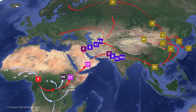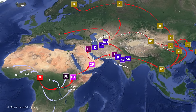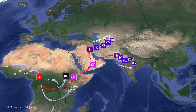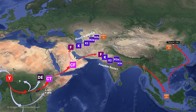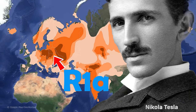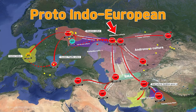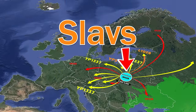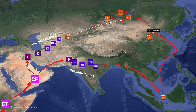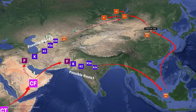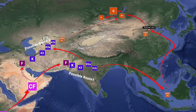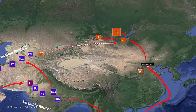Ancestors in haplogroup N first migrated to Asia, then through Asia and northern Siberia, they went to northern Europe. K2B-P331 diverges into K2B1 and K2B2-P295, also known as P. QM-242 and RM-207 separate from P1M-45, a direct descendant of P. The common ancestor of Q and R, P1M-45, is believed to have first appeared in Siberia around Lake Baikal 31,700 years ago. It is likely that Q and R also diverged near P1.